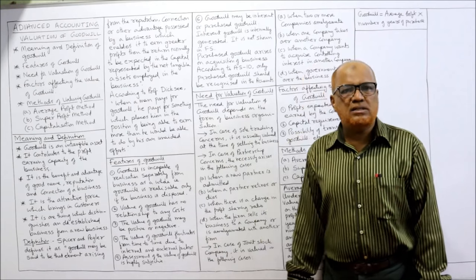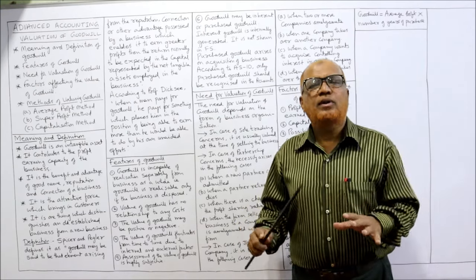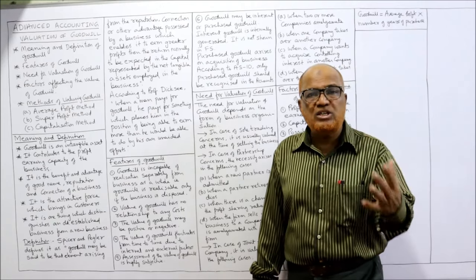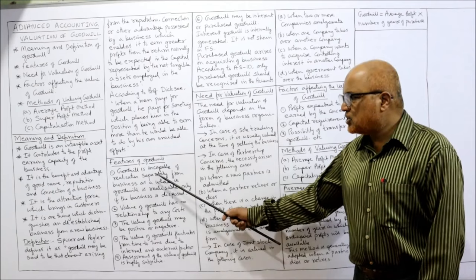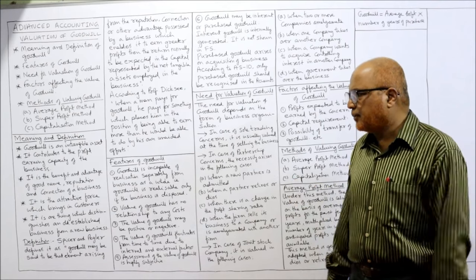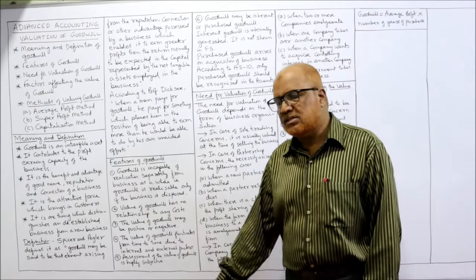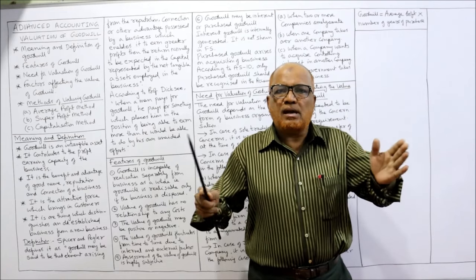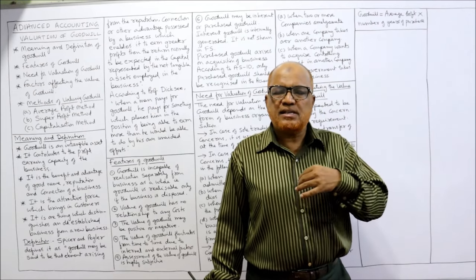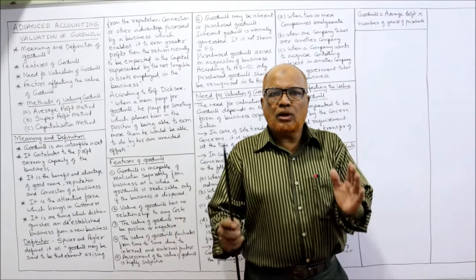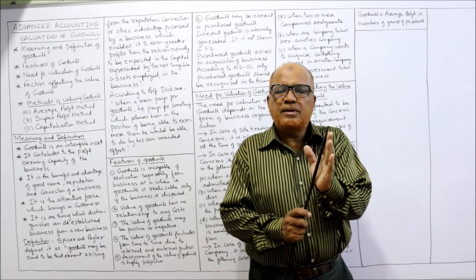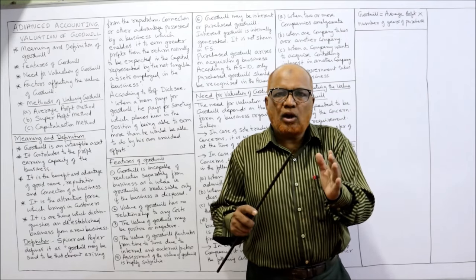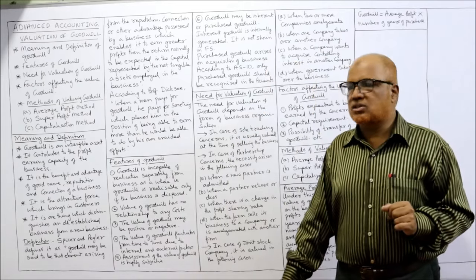So far I have explained the meaning of the term goodwill and definitions of goodwill. Now, features of goodwill — in examination they will ask what are the features or characteristics of goodwill. The first feature is goodwill is incapable of realization separately from the business as a whole; that is, goodwill is realizable only if the business is disposed. Goodwill is an intangible asset attached to the business — a business cannot sell its goodwill separately. Goodwill is inseparable from the business.